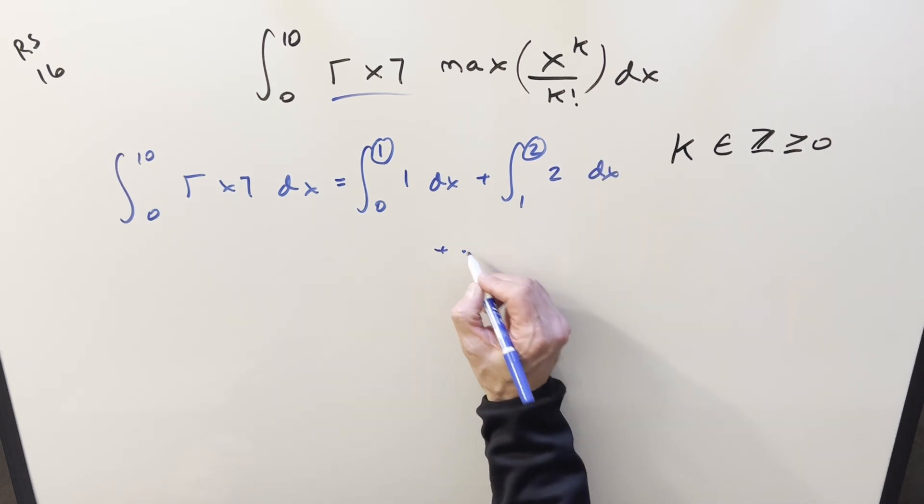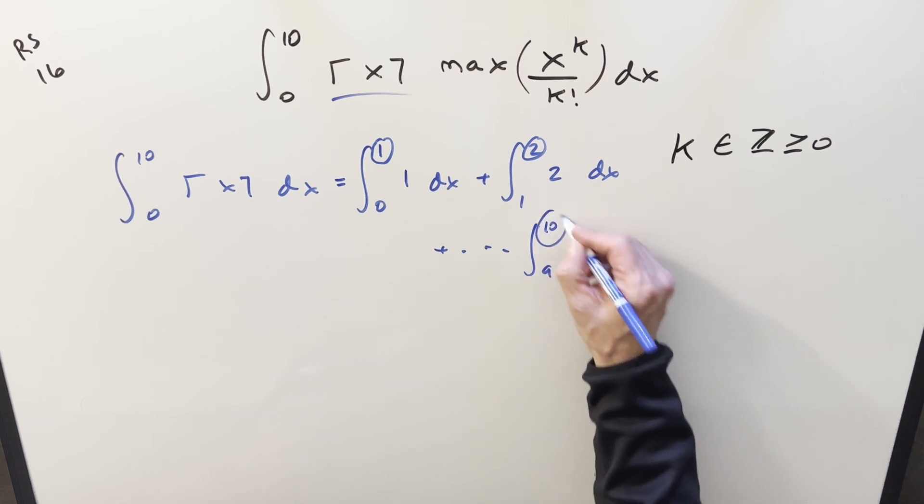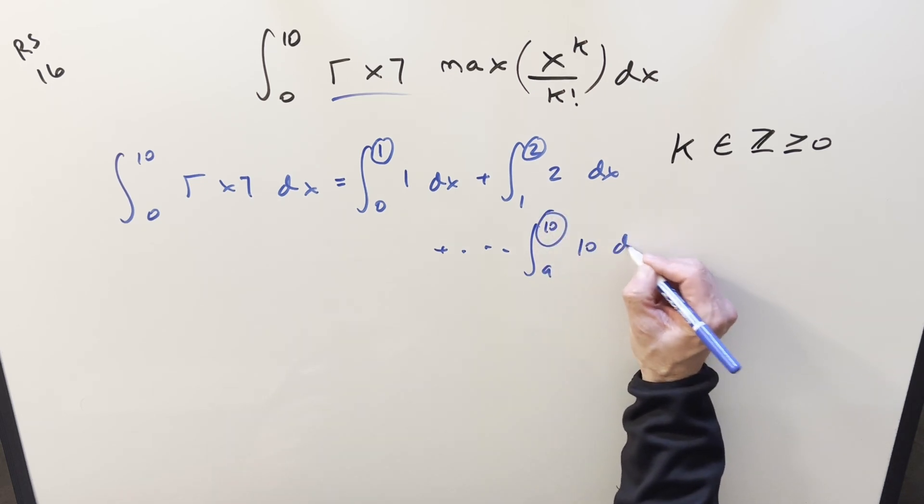And so this is just going to keep going like this, not to infinity with the last one. Let's just do the last one out. So the last one we're going from 9 to 10. x values between 9 and 10. Ceiling rounds us up to 10.